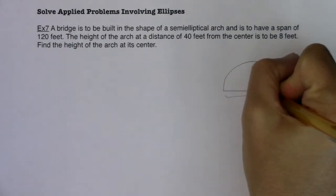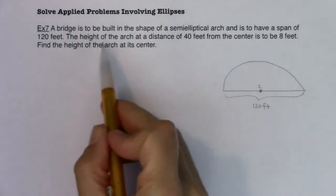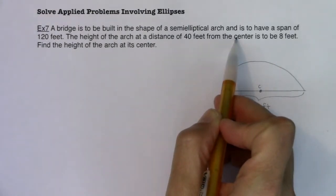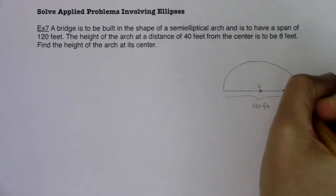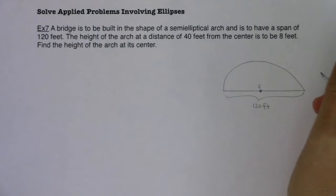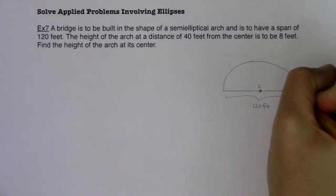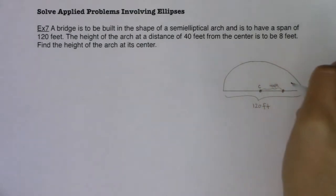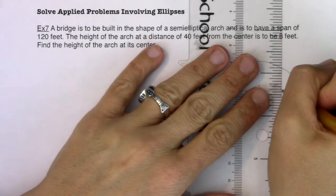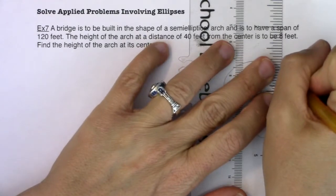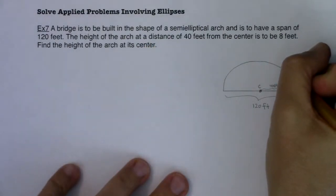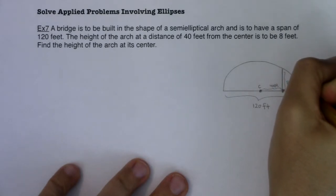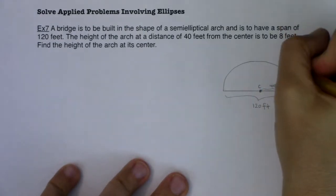Now here's its center. I don't know where the center is now but I definitely have the center here. It says the height of the arch at a distance 40 feet from the center is to be 8 feet. Now it doesn't specify if I'm 40 feet right or 40 feet left but through symmetry it wouldn't matter. So let's say I went 40 feet out from the center, I'll just go to the right, then I would go 8 feet up. This distance is 8 feet.